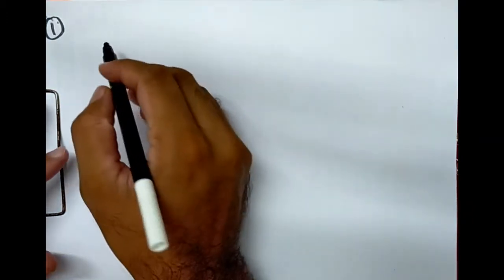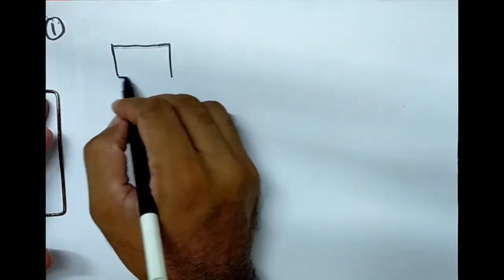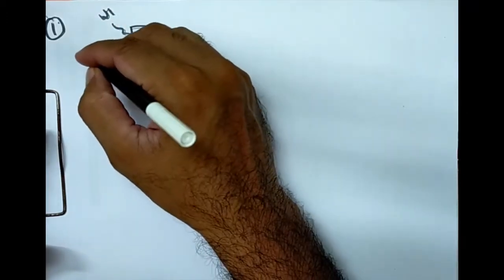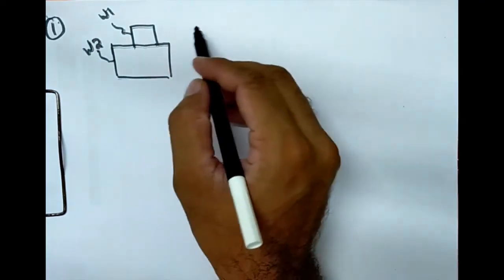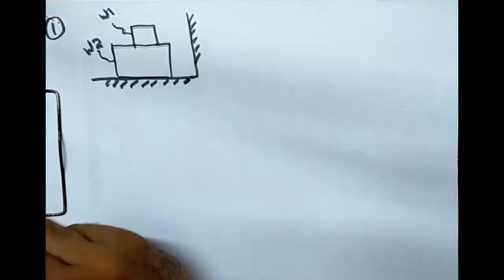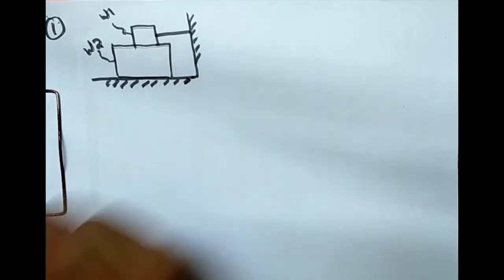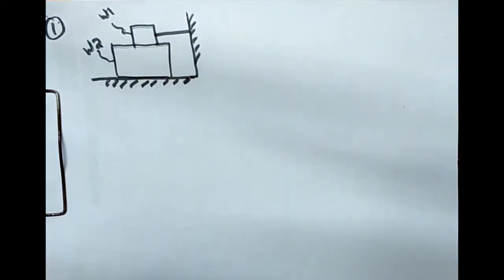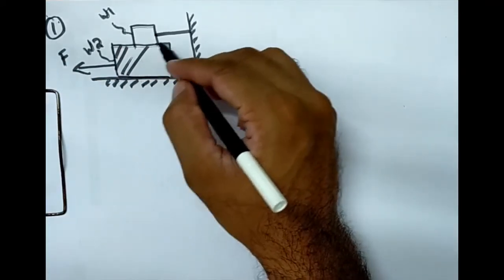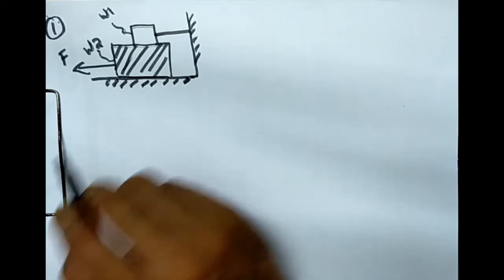Let's solve problem number one. We have two objects - object 1 and object 2 - resting on a surface. There is a cable holding object w1 in position, and there is a force F which is pulling object w2, forcing it to move with an acceleration a.